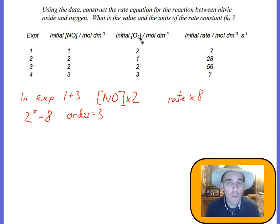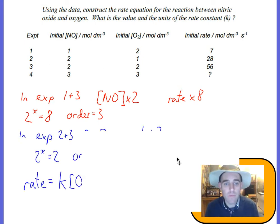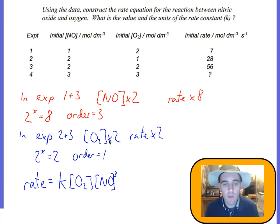If we look at O2 now, we want NO to stay the same, so that would be in experiments 2 and 3. You can see O2 has doubled—the concentration of O2 has doubled, times by 2. The rate, if we look at experiments 2 and 3, has gone from 28 to 56, so it's also doubled. So 2 to the power of something equals 2, which is 1. So it's order 1.